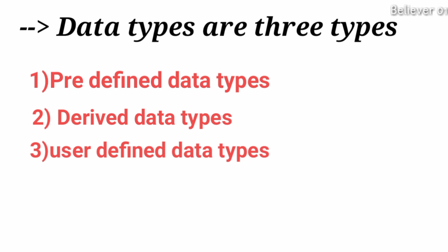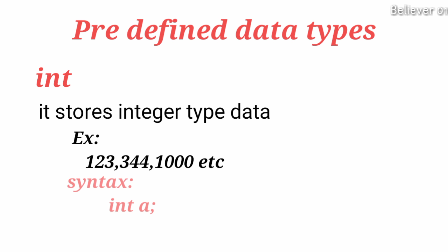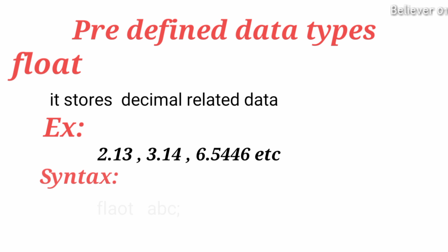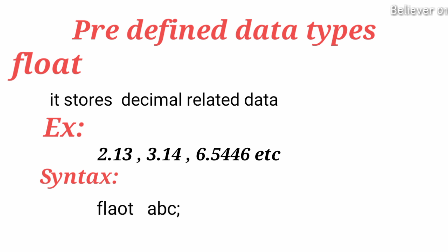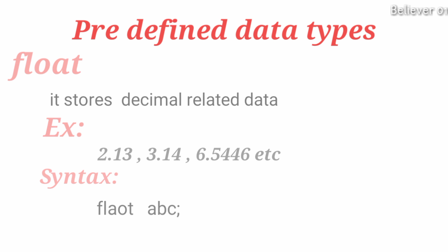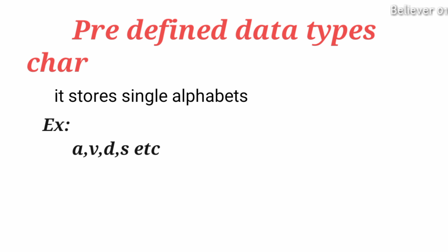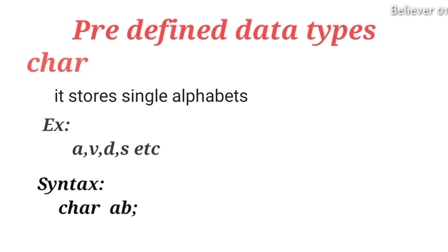First let me discuss predefined data types. The first one is 'int' — it stores integer type data such as 1, 2, 3, 4. Syntax: 'int a'. The second one is 'float' — it stores decimal-related data, for example 2.13, 3.14. Syntax: 'float abc'. The third one is 'char' — it stores a single alphabet, for example a, v, d, s. Syntax: 'char tab' — here 'char' is the data type and 'tab' is the variable.